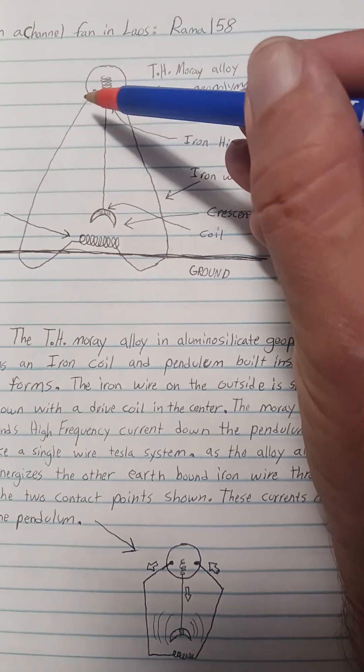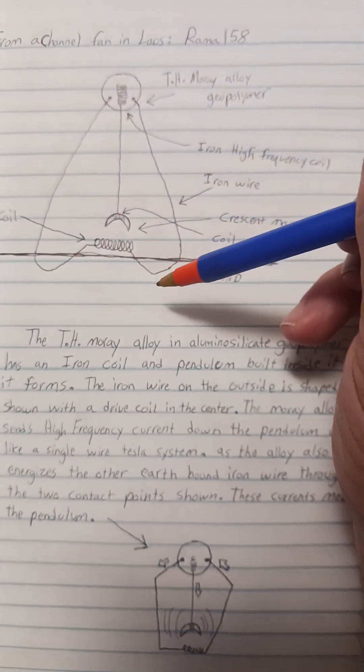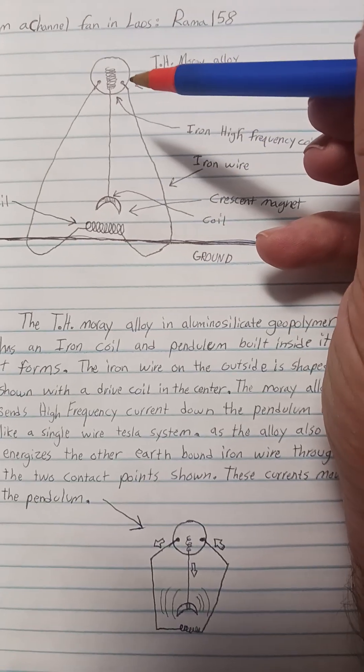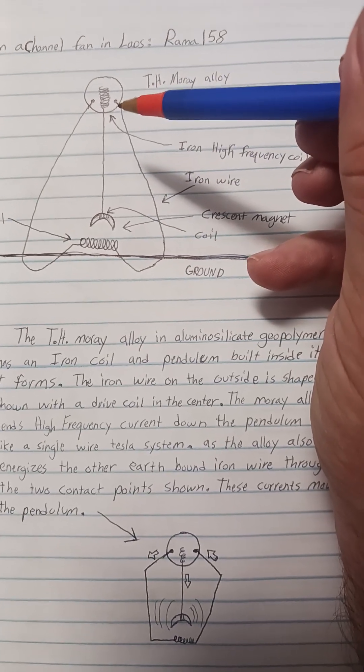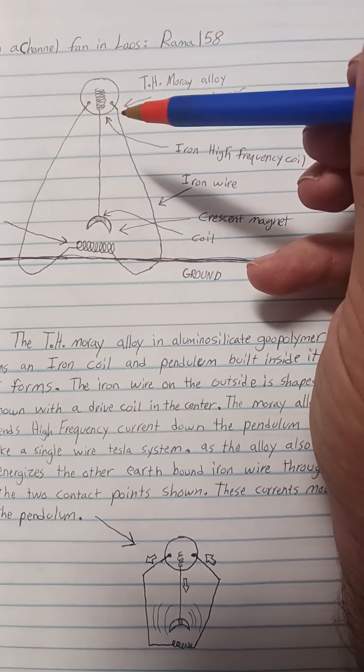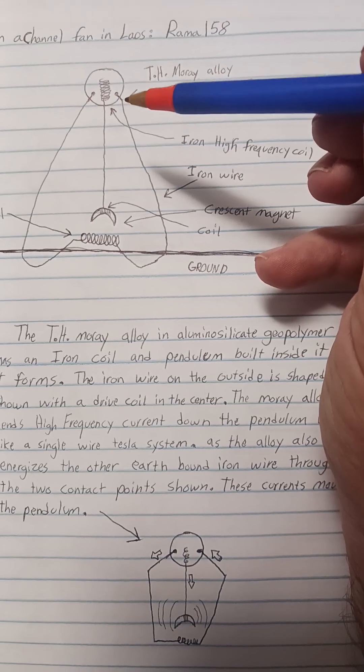The second wire, which has two points of the wire going into the earth, and then the two points connecting to the Mori alloy here, also receive energy from the Mori alloy.